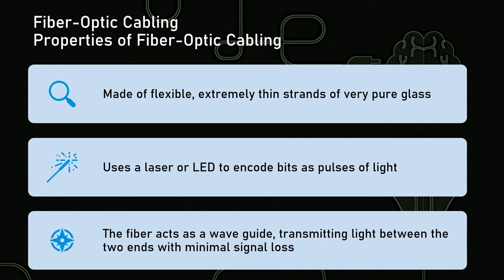Fiber optic cabling is made of very flexible, extremely thin strands of very pure glass — free of any impurities, because anything in the glass will diffract the optical transmission. We use a laser or an LED to encode bits as pulses of light. The fiber acts as a wave guide, transmitting light between the two ends with minimal signal loss — very much like a periscope on a submarine. You can test this at home with a pair of small mirrors and a cardboard tube: angle the mirrors parallel with reflective sides facing inward, and you can look around a corner because the light waves bounce off one another. Unfortunately, after many bounces, the light energy starts to diffuse quite a bit — you get what's called fuzz out from the lack of light intensity.